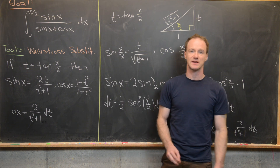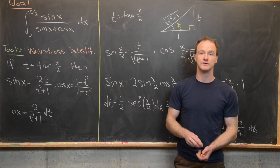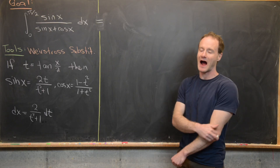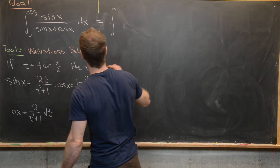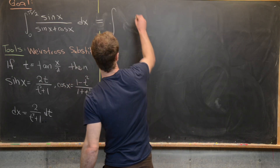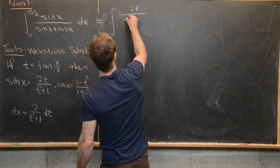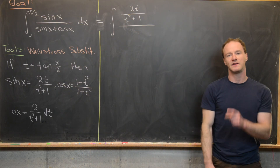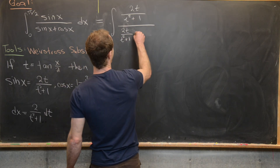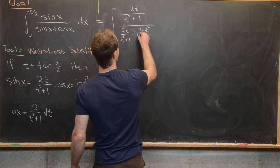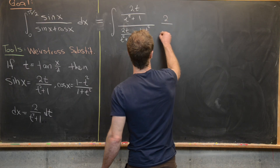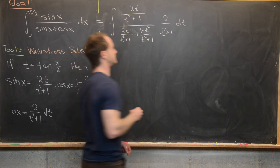We've derived the Weierstrass substitution tool. Now we evaluate the integral using it. Taking the integral and replacing sine x with 2t over t squared plus 1, the denominator sine x plus cosine x becomes 2t over t squared plus 1 plus 1 minus t squared over t squared plus 1, and dx becomes 2 over t squared plus 1 dt.